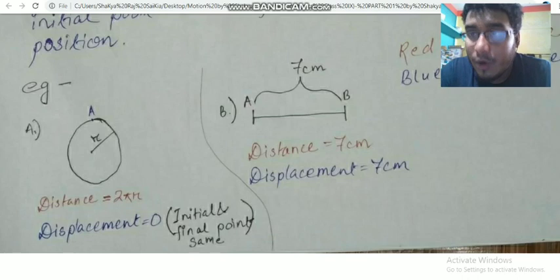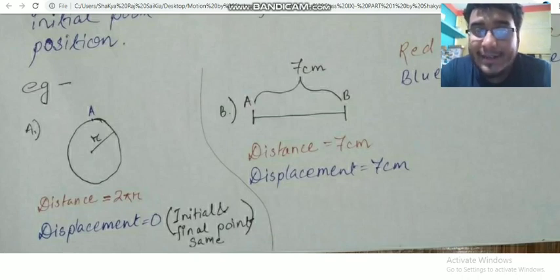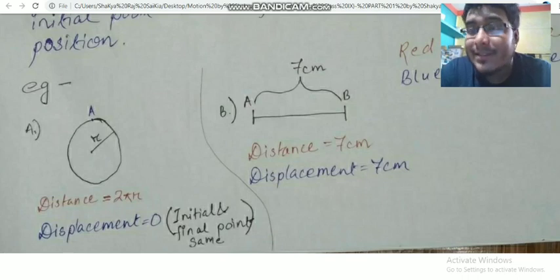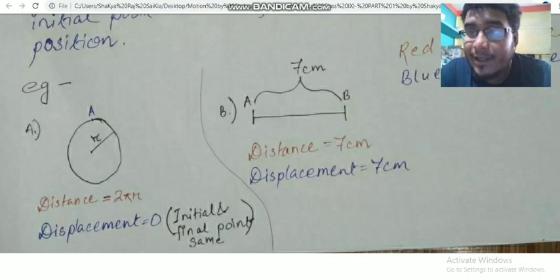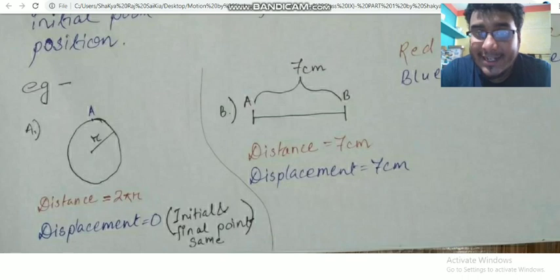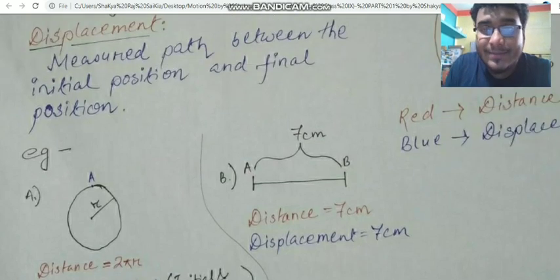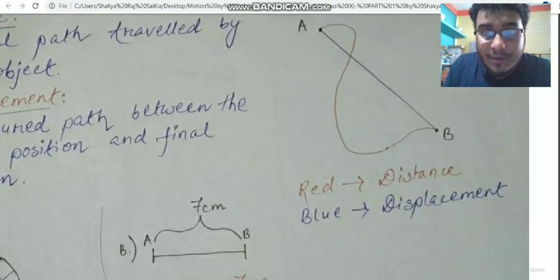Here is another example: Point A and Point B have a gap. The distance between A and B is 7 cm and the displacement is also 7 cm, because A and B are different points — the final and initial positions differ, so distance equals displacement here at 7 cm.